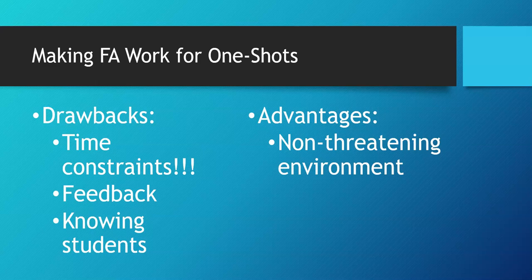Some drawbacks of one-shots for formative assessment include time constraints — if we only have that hour, we need activities that work within it. Formative assessment requires feedback, which can be difficult given time limits. Knowing students is also challenging; faculty learn class personality and individual student needs over the year, whereas we have to learn that within the one hour. However, librarians have one major advantage: we are a non-threatening environment. We don't usually give grades, and there's room to fail and learn through failure.